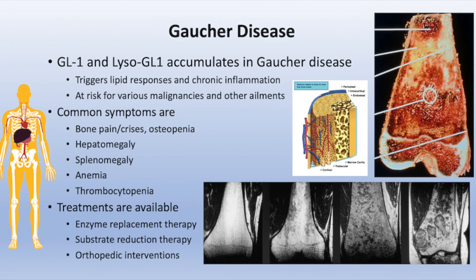LysoGL1 is directly linked to bone mineral loss, osteopenia, and osteoporosis. It is also a significant antigen that can react with B and T cells in the immune system, leading to immune stimulation and chronic inflammation. It is also believed to be linked to the development of monoclonal gammopathy, myeloma, and possibly other malignancies in patients with Gaucher disease.